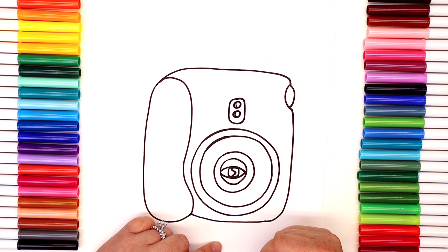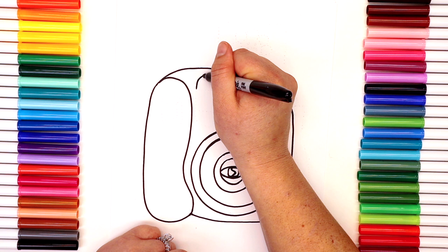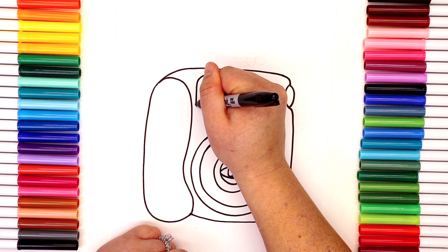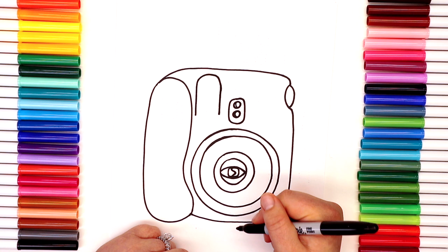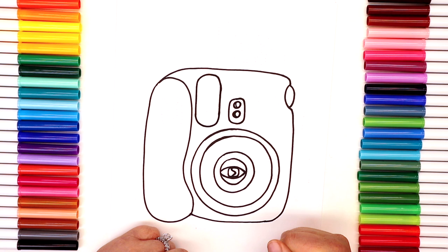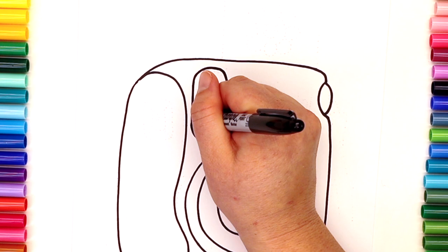Now just edge the left side—that'll give it a little dimension. Okay, time for the flash. We're going to make almost the same exact shape as the viewfinder, just a bit bigger. You could round it out a little bit more if you want as well.